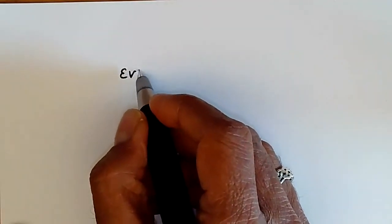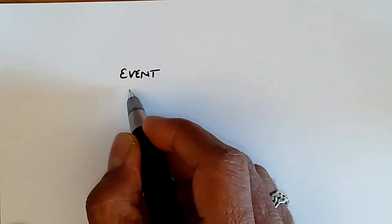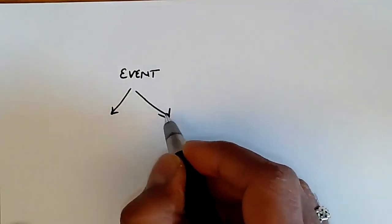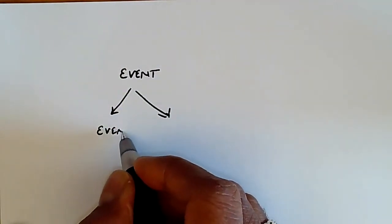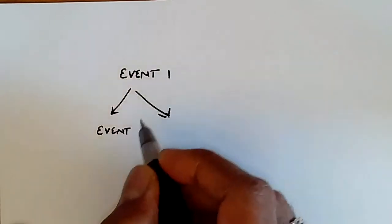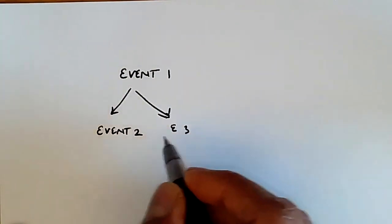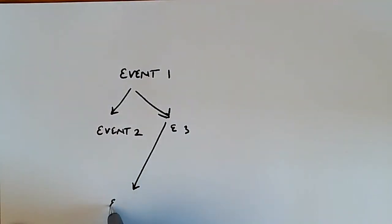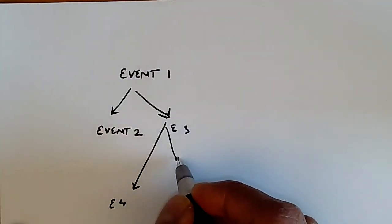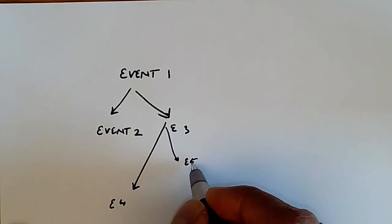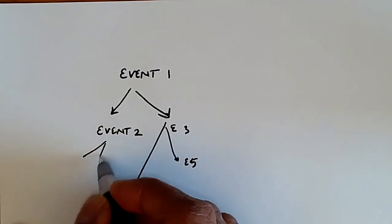We have some kind of an event, and this event causes some other events. Let's call this event one, we'll call this event two, and I'll just abbreviate that to E, so this is E three. And then E three in turn leads to E four, and this leads to E five. And E two leads to some other events.